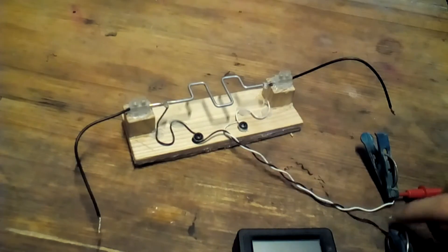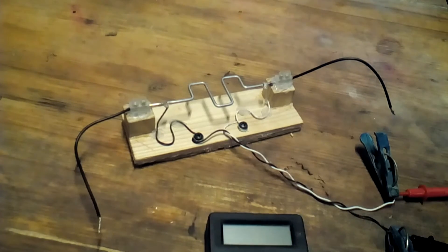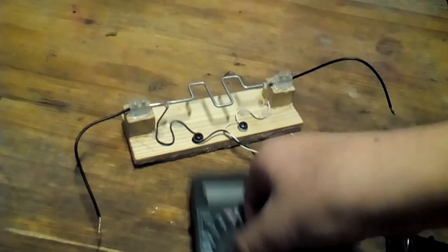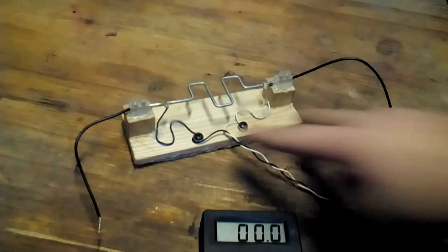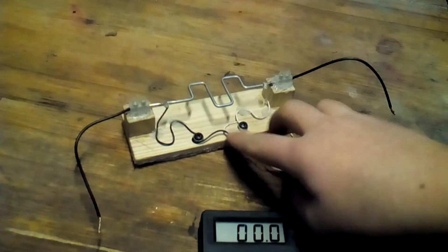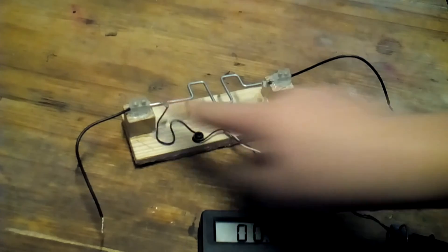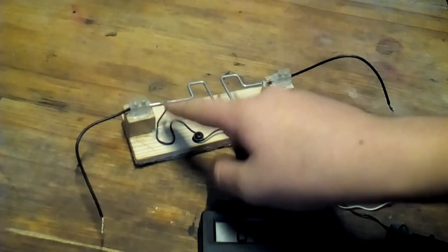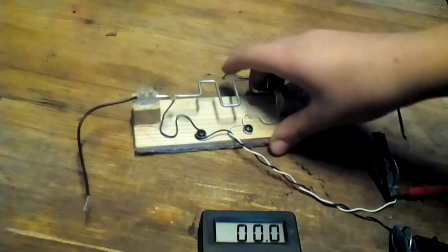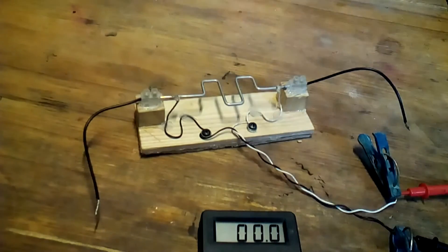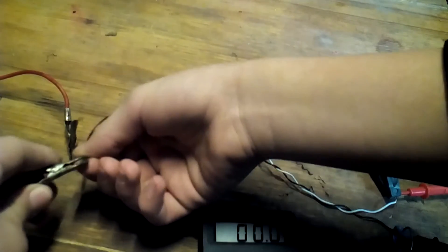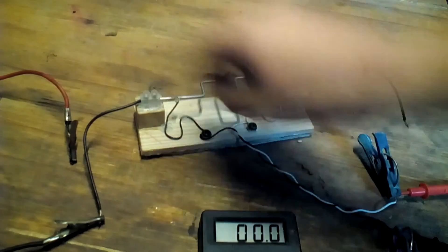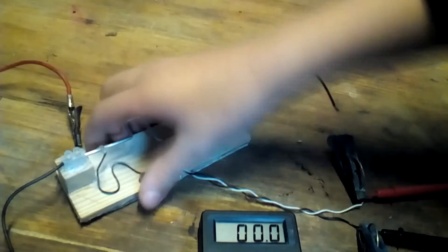So there I connected my multimeter set to millivolts. And the wires are connected there and there. It measures the voltage drop. So let me connect it. This is made for measuring high amperage.